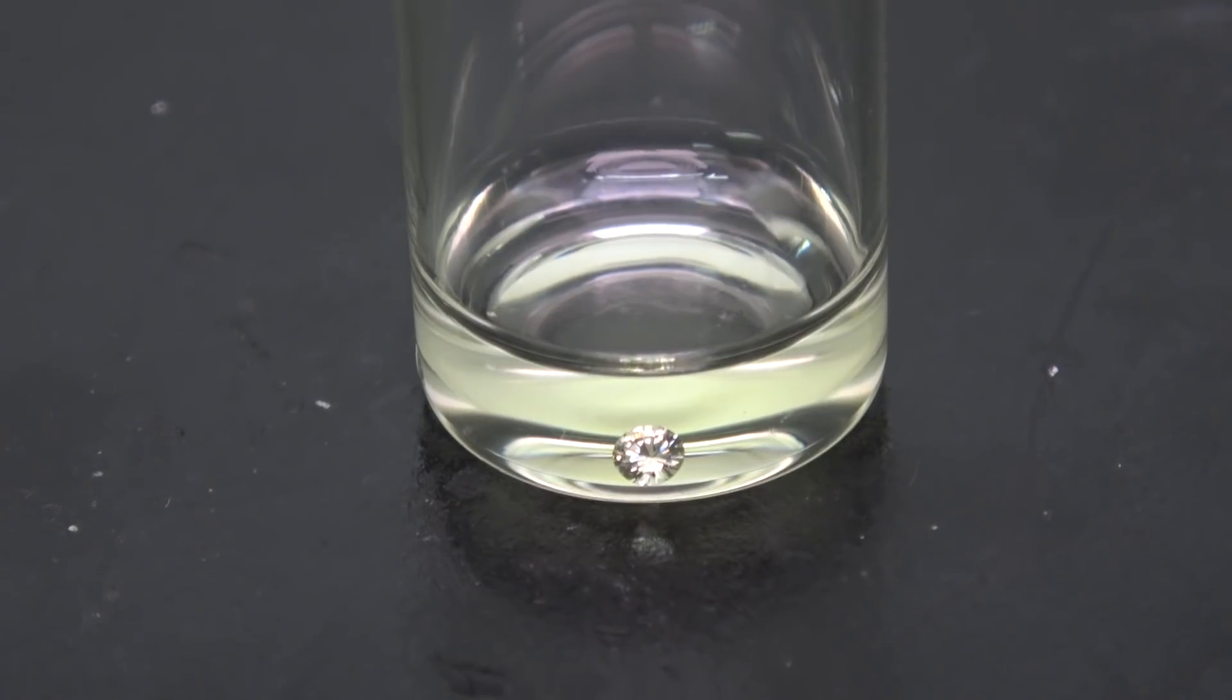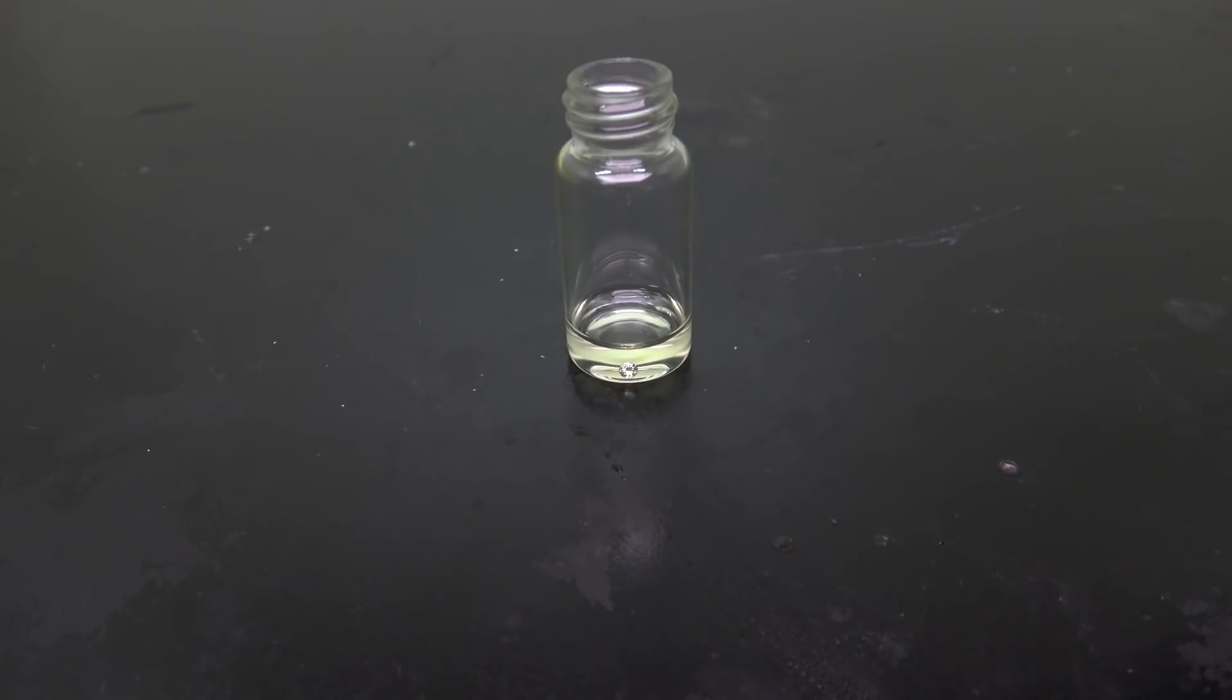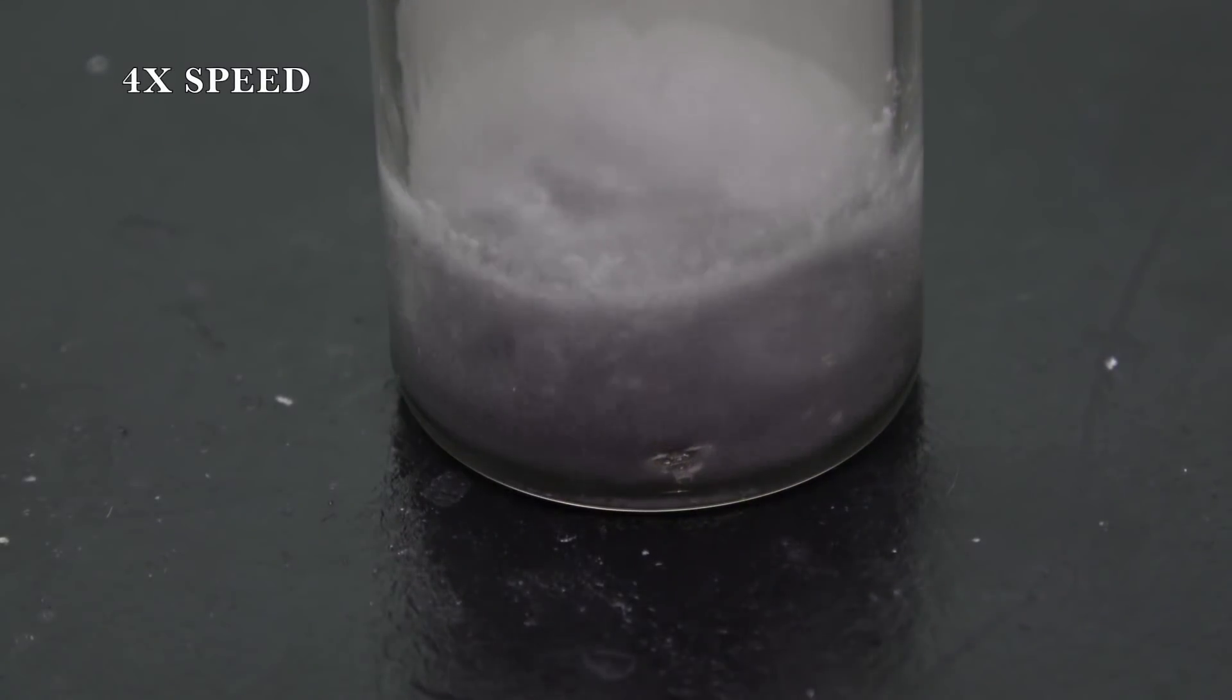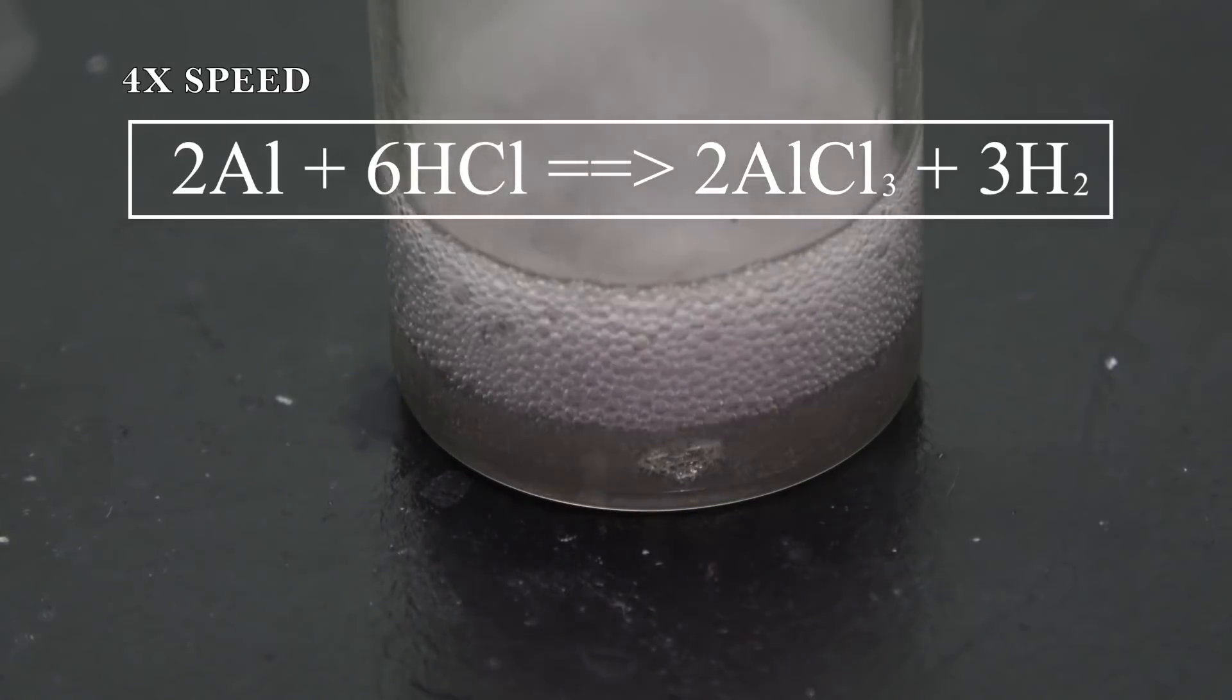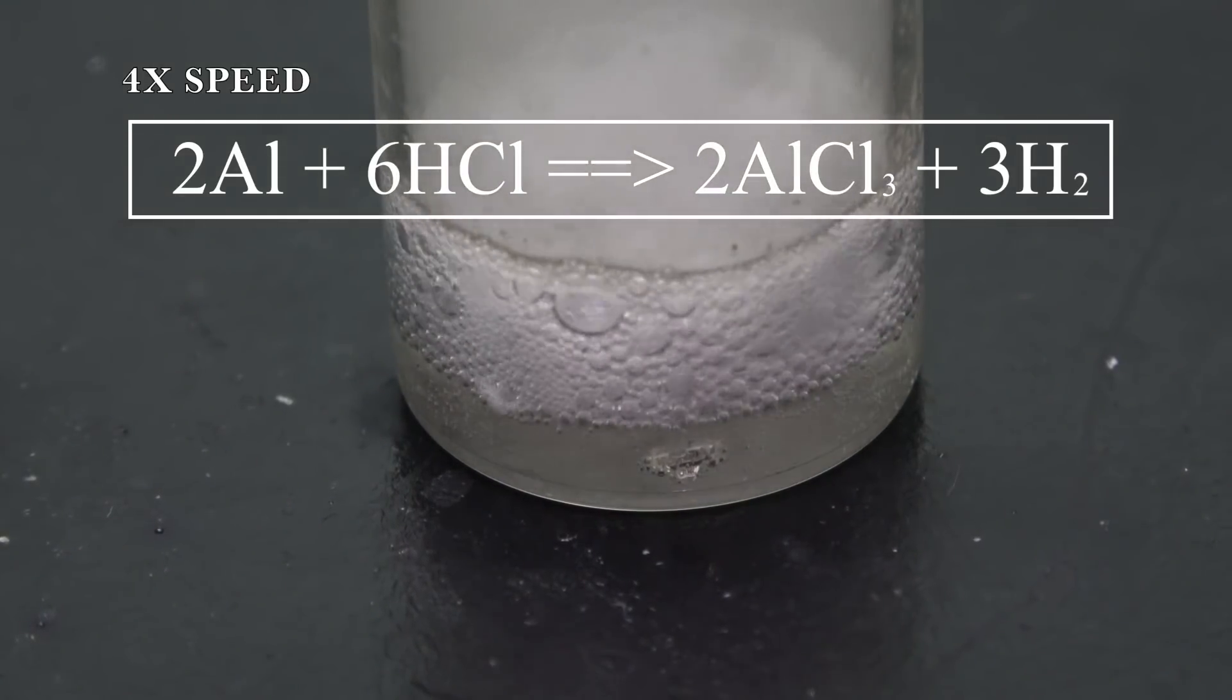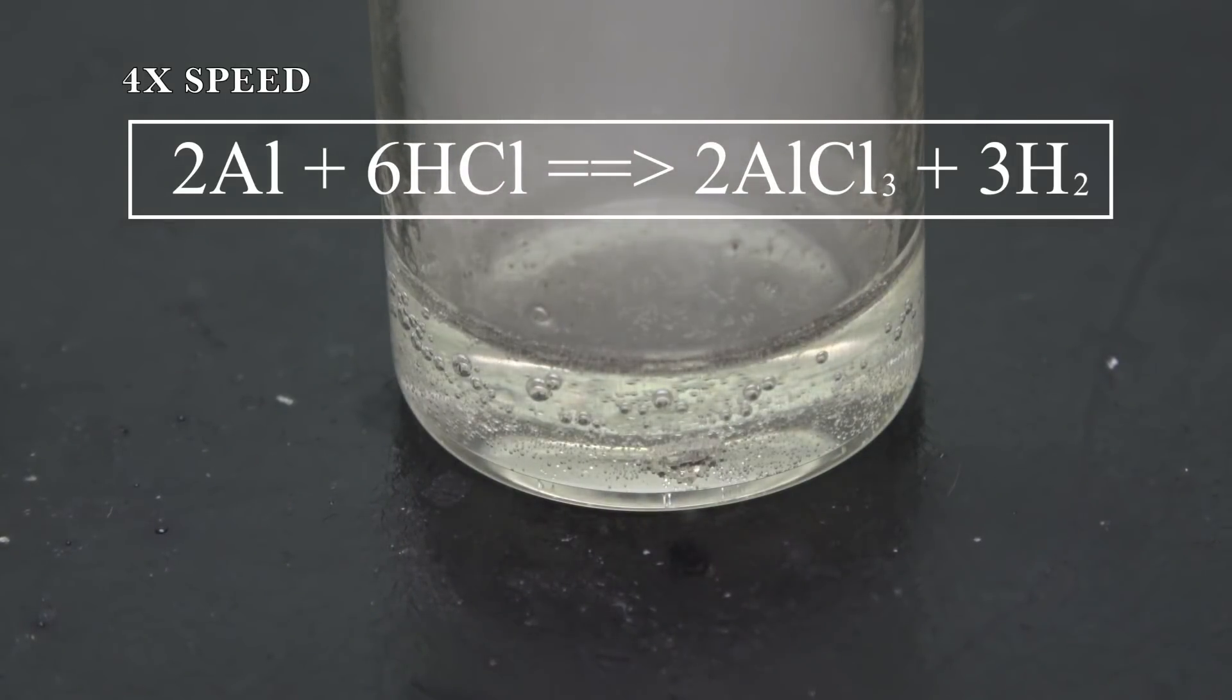And just for comparison purposes, I'm going to drop in a piece of aluminum just to show you that I put in the real deal. Aluminum violently reacts with hydrogen chloride forming aluminum chloride and hydrogen gas as you see here.